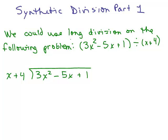We could always use long division to do this problem, 3x² - 5x + 1 divided by x + 4. So let's just go ahead and do that as a reminder. Remember you're really dividing by this whole thing x + 4, right? And so you have to think x times what will give you this 3x².